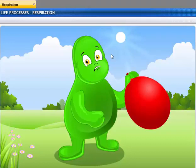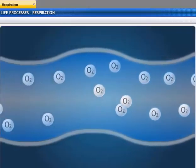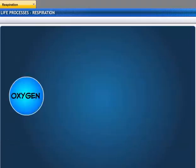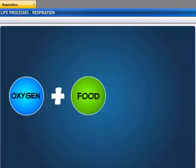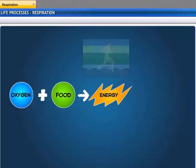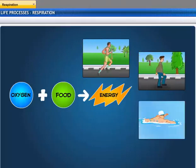Phew! I'm out of breath. Let me get some air. Air is vital for us as it contains oxygen. Oxygen is used to break down the food we eat into energy. This energy in turn is used by us for various activities like running, walking, swimming and cycling.